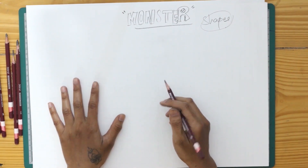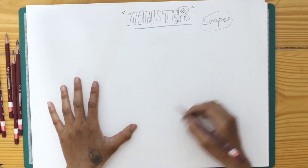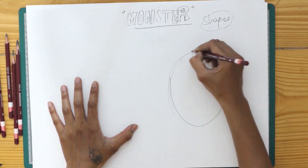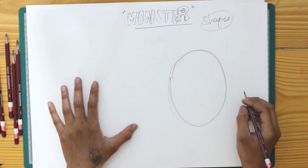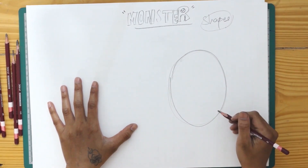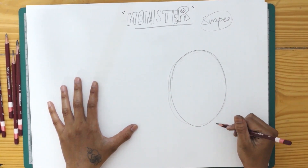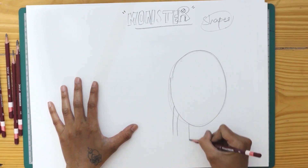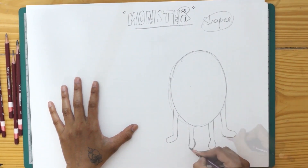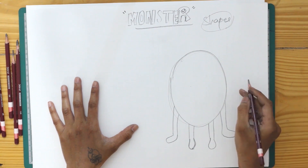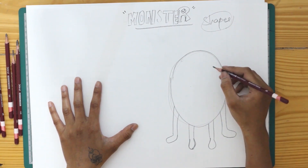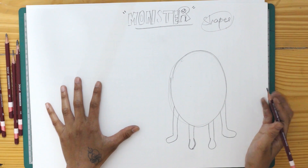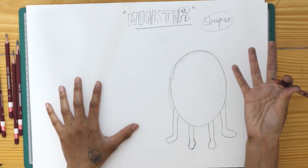So I think I'm going to use an oval. I want to give him four legs — maybe four legs. Because why not?